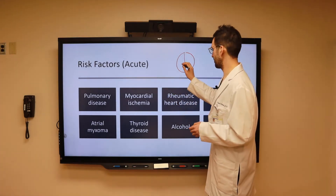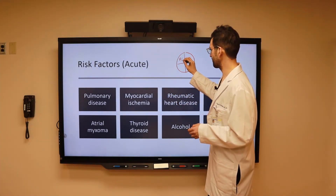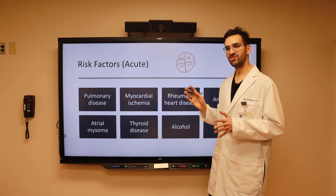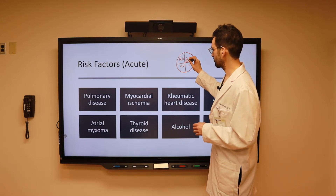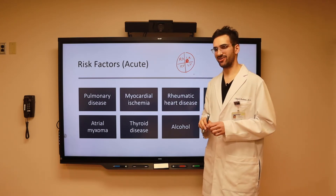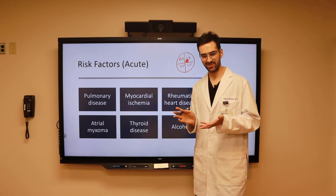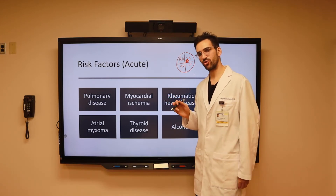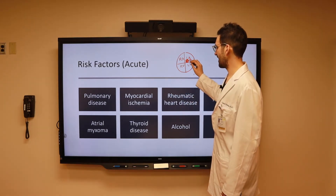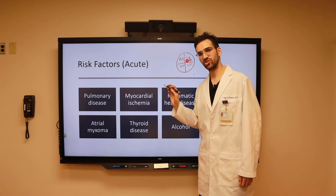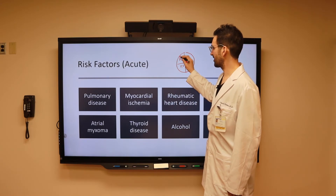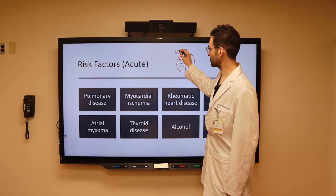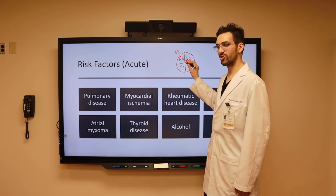Here we're drawing out a normal heart, with the right atrium, left atrium, right ventricle, and left ventricle. In about 70 to 80% of cases, atrial myxomas are located in the left atrium. With this structural mass present in the atria, it shouldn't be hard to imagine that this can set off an abnormal focus of electrical activity, such that rather than originating in the SA node, an abnormal rhythm originates in a different portion of the atria.